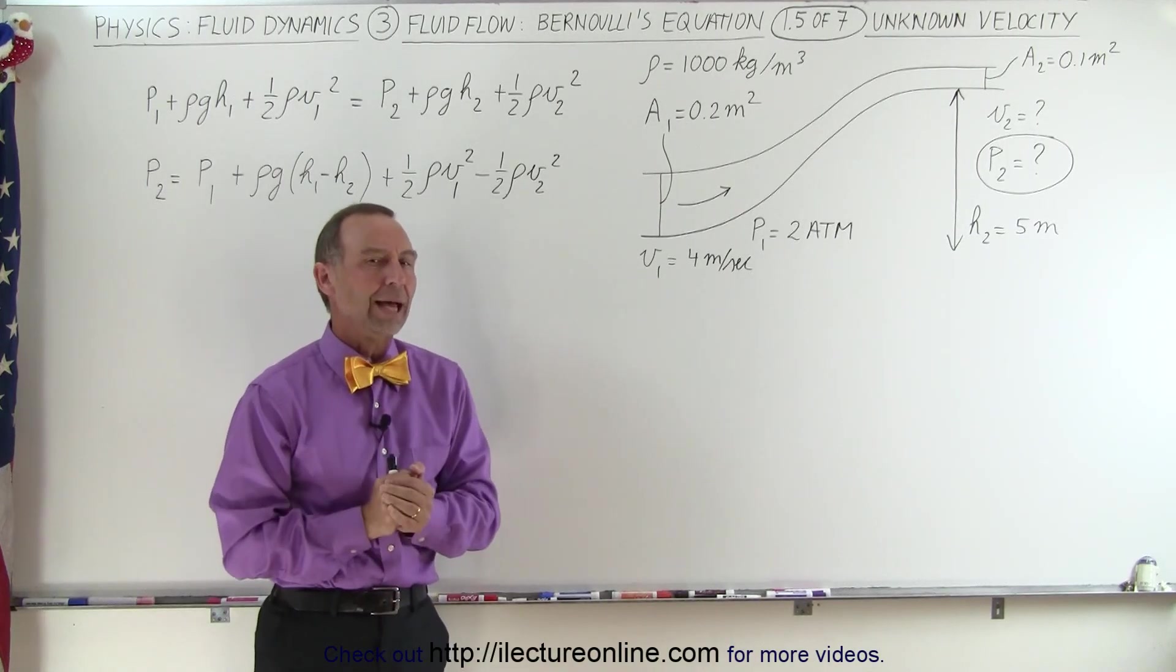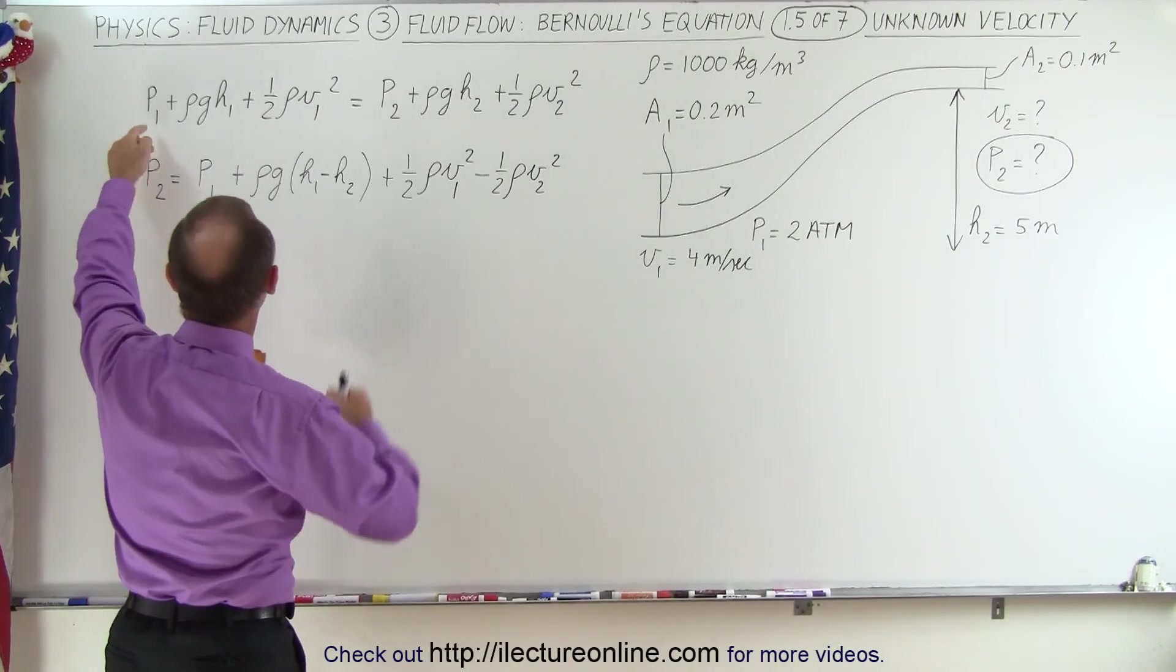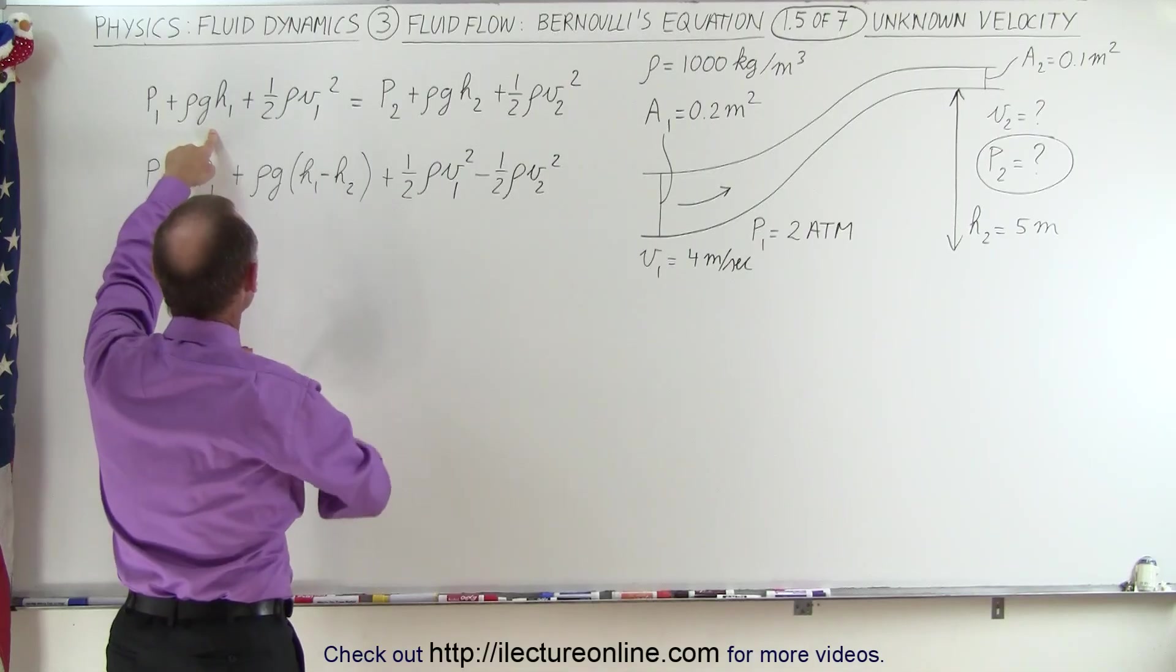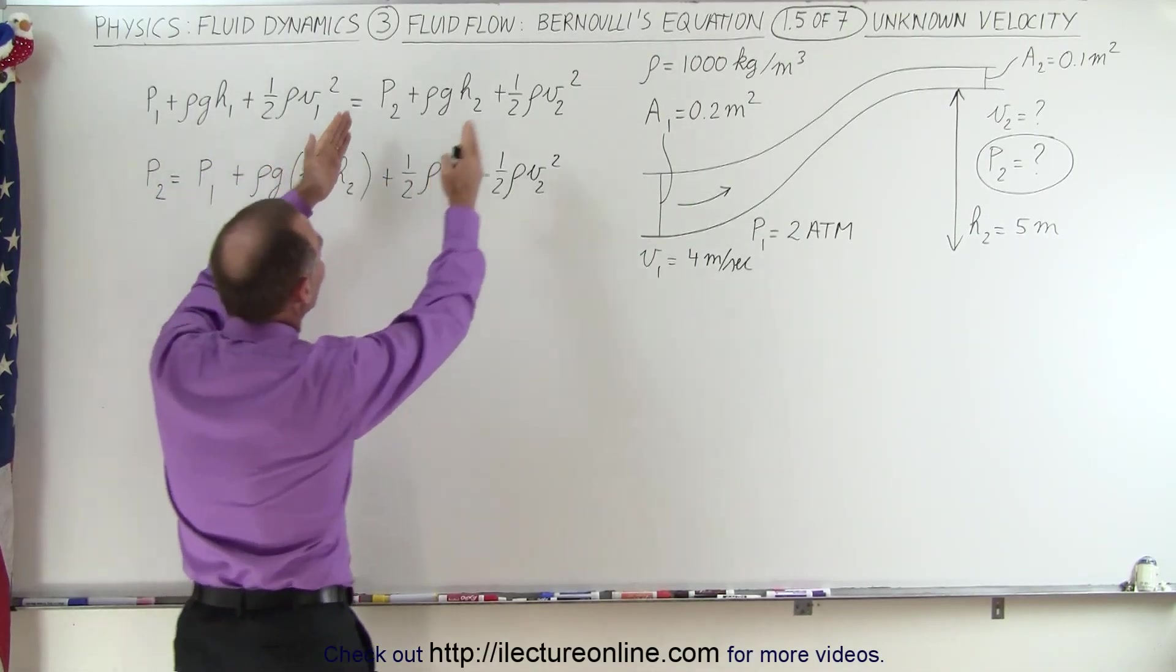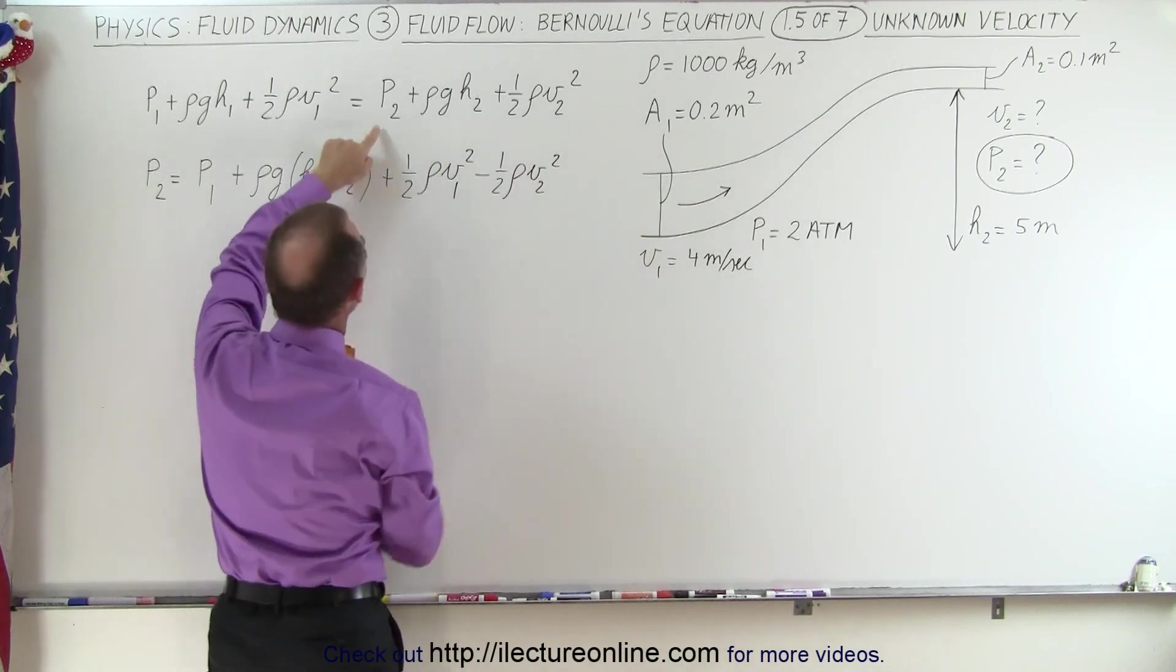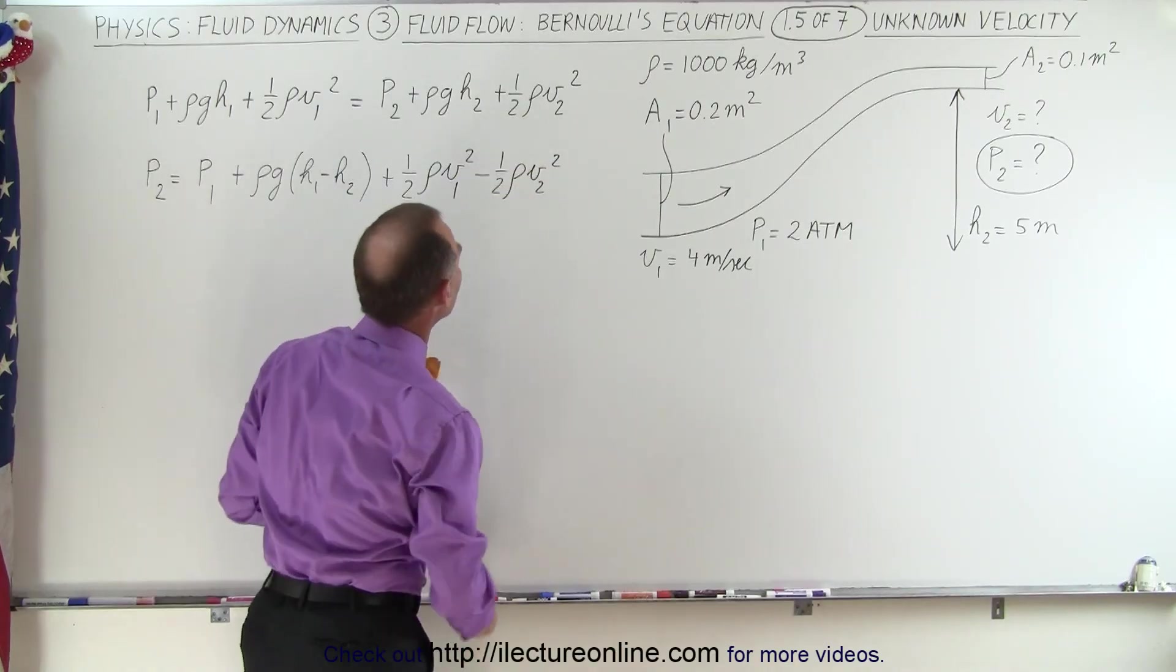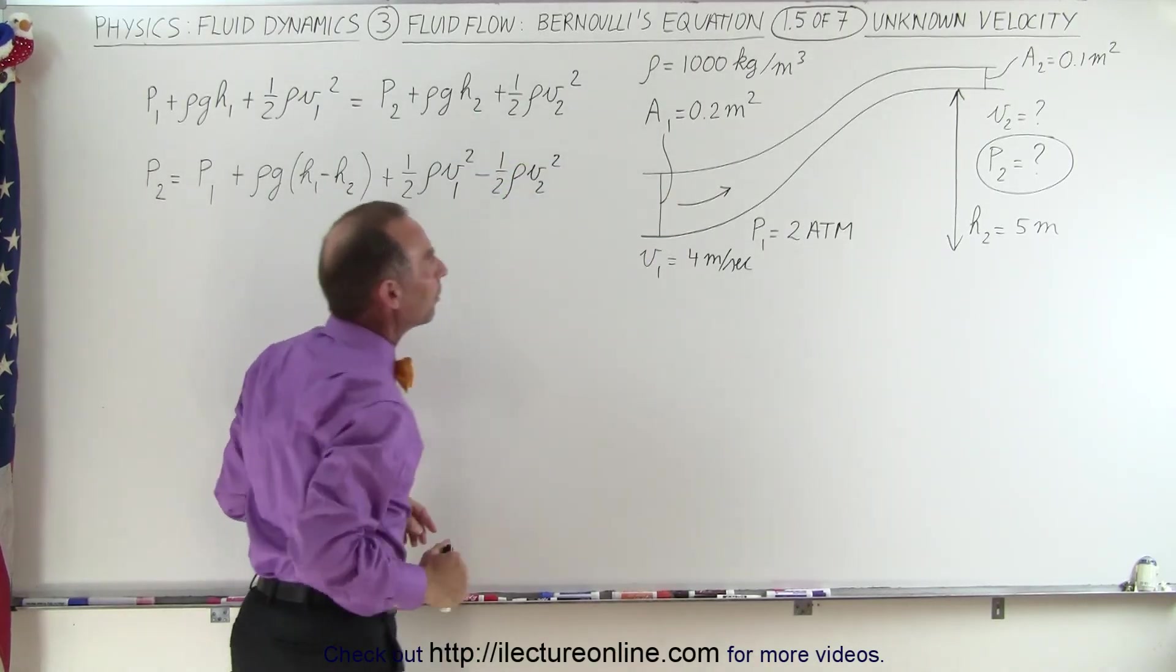So how do we solve a problem like that? Well we start with Bernoulli's equation that says that P1 plus rho g h1 plus one half rho V1 squared must equal P2 plus rho g h2 plus one half rho V2 squared. H is the height of the pipe, V is the velocity of the fluid through the pipe.